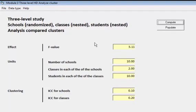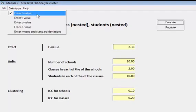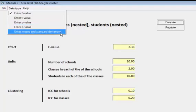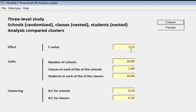I have some additional options over here. I can choose to enter the F statistic, or the T value, or the P value, or the D value, or the means and standard deviations, all of these based on the analysis that was performed comparing the clusters. I enter the F statistic.